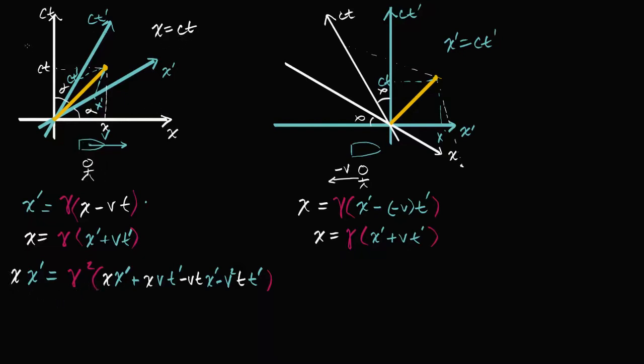So for all the x's, I'm gonna substitute it with the ct's. So x, substitute ct. And then all the x primes I'm gonna substitute with a ct prime. So x prime, ct prime. And then I have an x prime here, so it's gonna be ct prime.